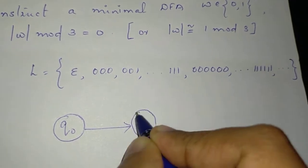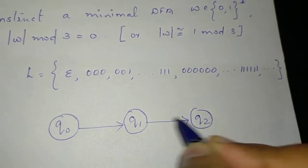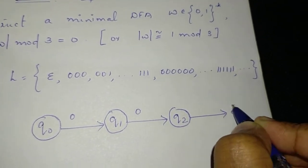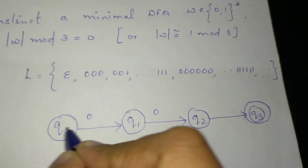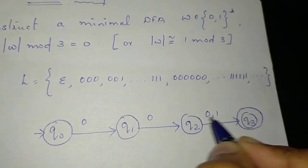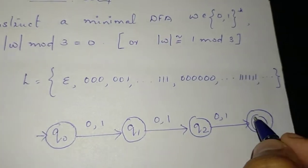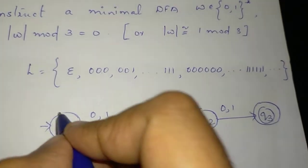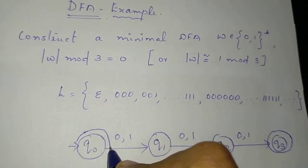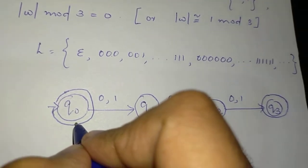So we will use the string in the skeleton where the length of epsilon is 3. We define states Q0, Q1, Q2 with transitions on 0 and 0. This is the final state and this is the initial state. We accept strings where the length gives remainder 0, so the final state is Q0.